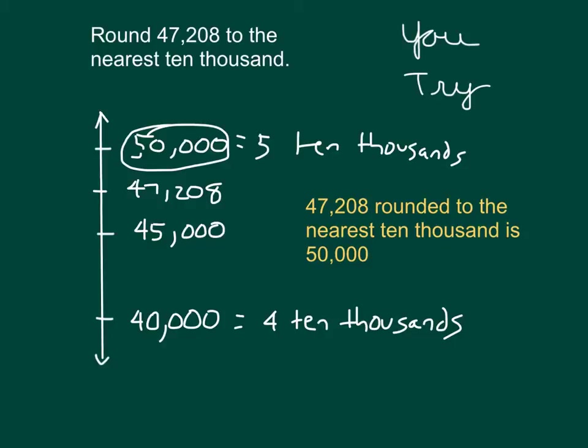And so we say, what is in yellow here? Say it with me. 47,208 rounded to the nearest 10,000 is 50,000. That's our answer.